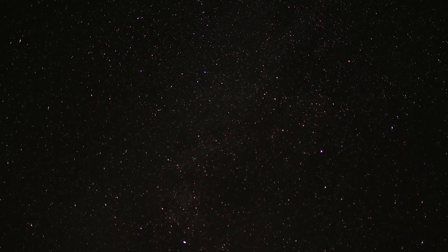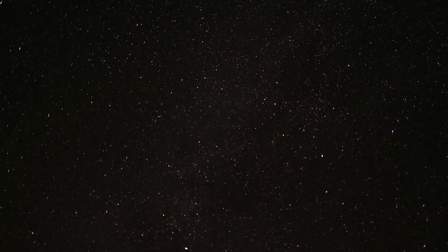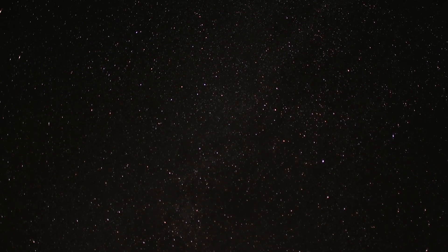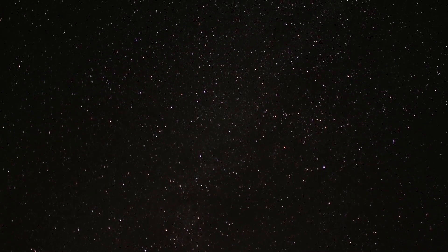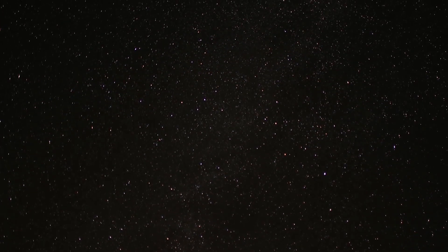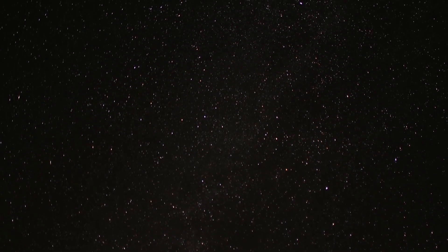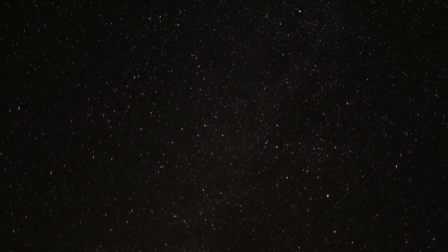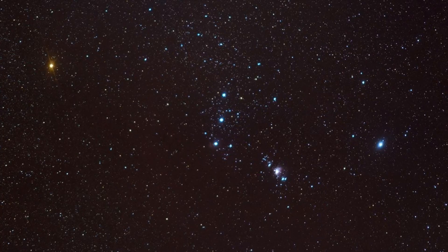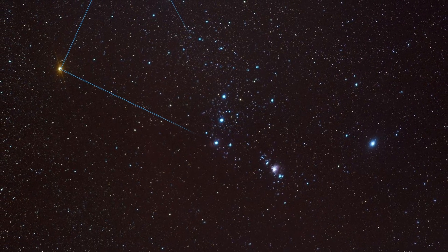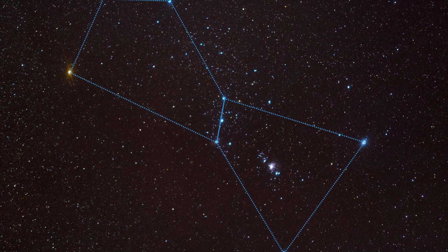For millennia, stars have been worshipped. They've been seen as omens of bad things to come, and they've been used by sailors to chart courses across the oceans. The ancients mapped out constellations, grouping stars together by shapes they perceived in the night sky. We still use the names of many of these constellations today. For example, you may have heard of the constellation Orion, the Great Hunter.